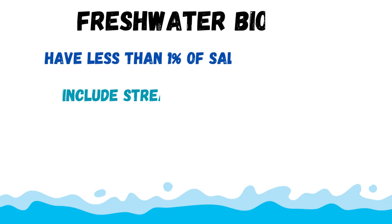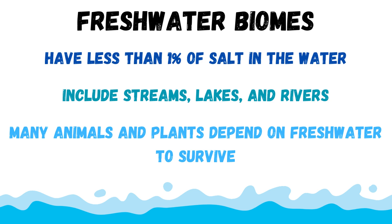Let's start off with freshwater biomes. All humans, plants, and animals need freshwater to live, and that's why we depend on freshwater biomes. Freshwater biomes have less than 1% salt, and that salt occurs naturally. It's not very salty — both in taste and in the chemistry of the water — and since it's not that salty, many different animals can thrive in this habitat, and these animals are specifically adapted for freshwater biomes.